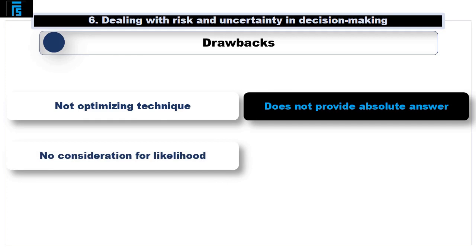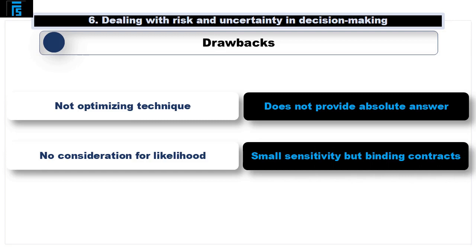Secondly, it doesn't include any consideration for how likely you are to be wrong. For example, it looks like you should be concerned about a variable with only 0.5% sensitivity.